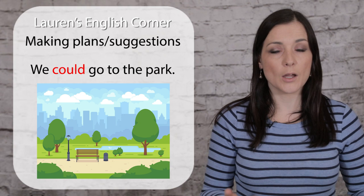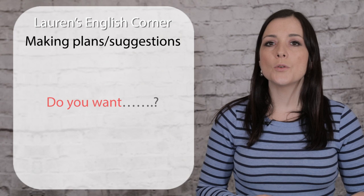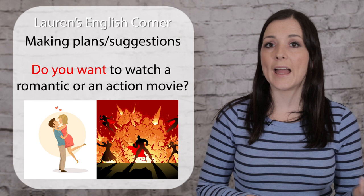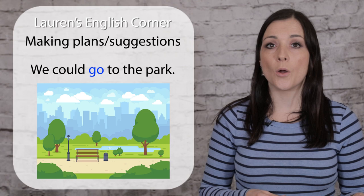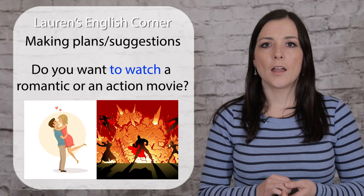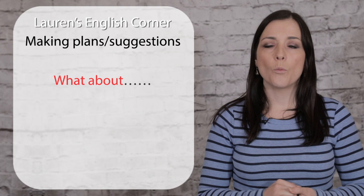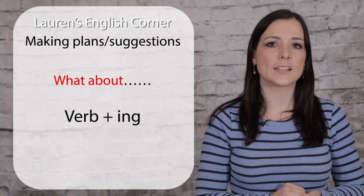Another pattern is "do you want?", for example, "do you want to watch a romantic or an action movie?" In those two cases — "we could go" and "do you want to watch" — the verb that follows the suggestion is in the infinitive. However, with another pattern they used, "what about?", the verb has -ing: "what about going to the cinema?", "what about watching?", "what about listening to?"